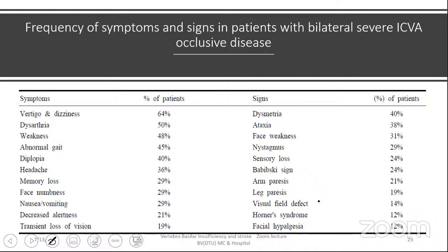Important signs include: dysmetria (40%), ataxia (31%), face weakness, nystagmus, sensory loss, Babinski sign, arm paresis, leg paresis, visual field defects, Horner's syndrome, and facial hypoalgesia. PCA territory clinical features can be discussed as unilateral and bilateral. Unilateral PCA territory: for occipital lobe dysfunction, there will be contralateral homonymous hemianopia with macular sparing. In the dominant occipital lobe with splenium of corpus callosum involvement: alexia without agraphia. Ventral occipital cortex (infra-calcarine, the 'what' pathway) gives achromatopsia — color differentiation deficit — contralateral to the lesion, can be associated with quadrantanopia. Supra-calcarine (the 'where' pathway) gives inferior quadrantanopia (Meyer's loop/temporal lobe) or superior quadrantanopia.